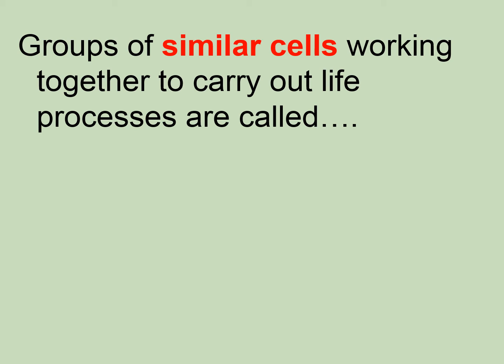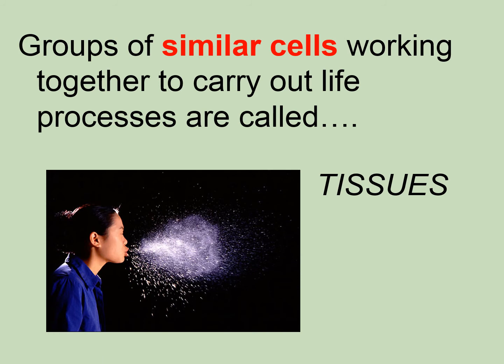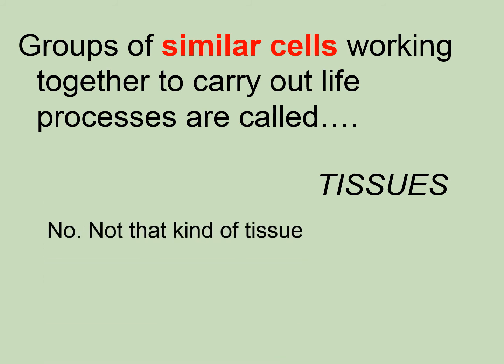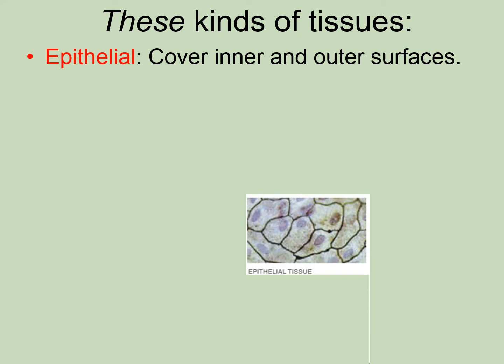In these multicellular organisms, there are similar cells that work together to carry out life processes. We call these tissues — and of course, we're not talking about those kinds of tissues. The first type of tissue is a type we've already met. When we did the 'We Are Not Plants' lab, we looked at elodea cells from an aquatic plant and also cells scraped from the insides of our cheeks. Those were epithelial cells. Epithelial tissue covers all the inner and outer surfaces of our bodies, lining the digestive tract, the respiratory tract, and all surfaces. There are lots of different types of epithelial tissue.